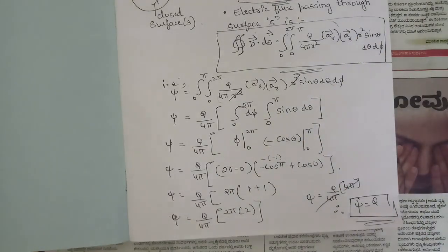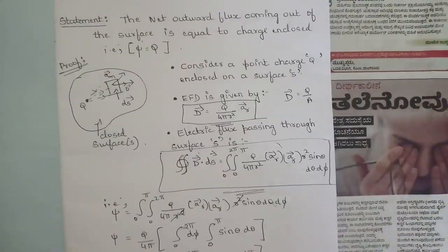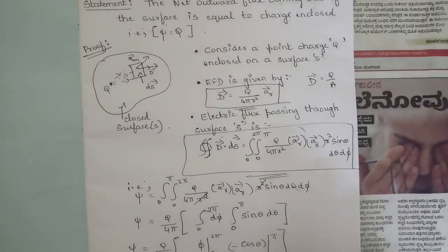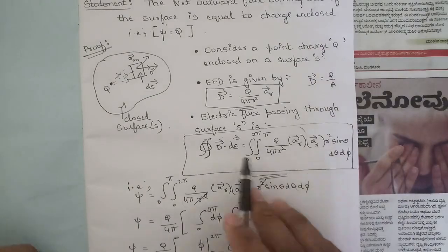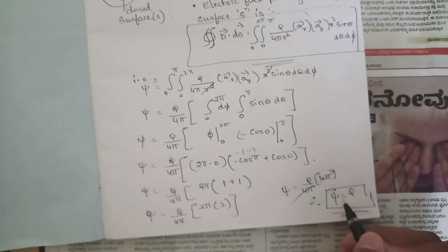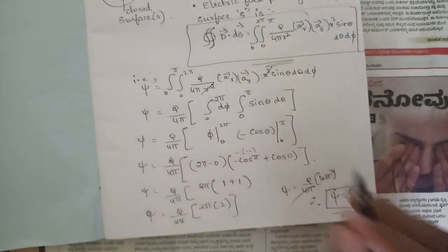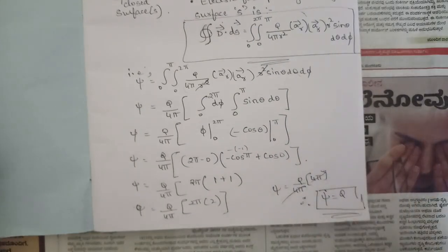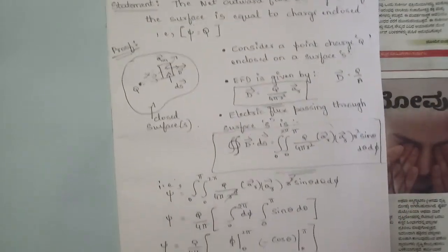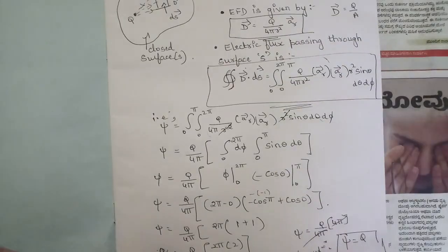By this derivation, we have proved that psi equals Q, which corresponds to Gauss's law. Using electric flux density and the closed surface integral, we have derived that the outward flux coming out of the surface equals the enclosed charge. Hence proved. This derivation is very important, so please make a note of it.